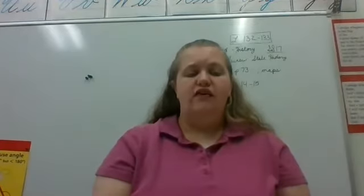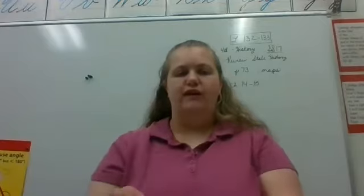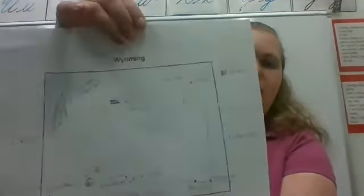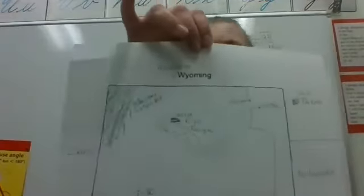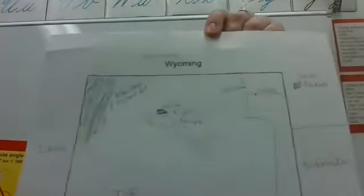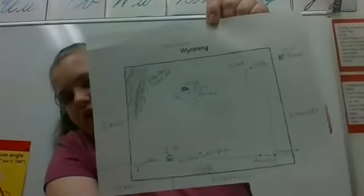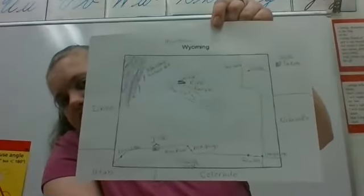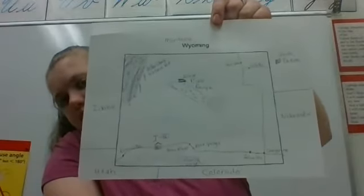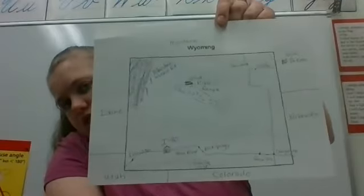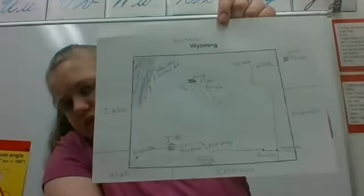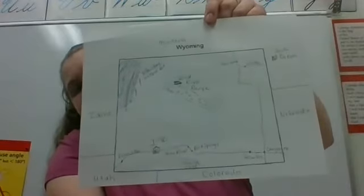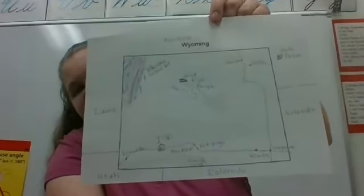The first thing we're going to look at is the map of Wyoming that I've created. I'm going to hold it up here for you to see. This is the map that looks very similar to what you're going to see on the test. I've added a couple extra things, but this will help you study. The first thing is to note the states that surround Wyoming.